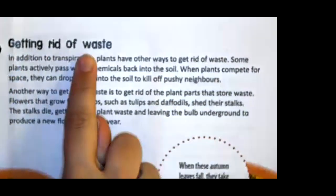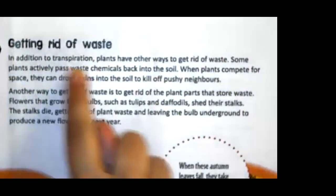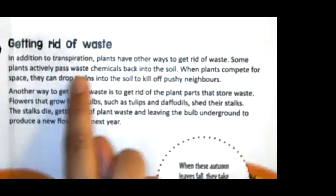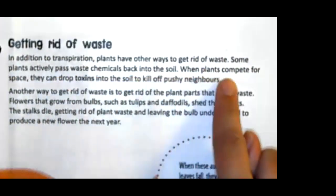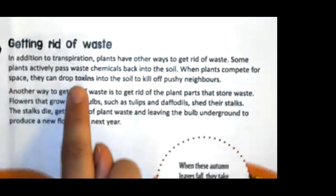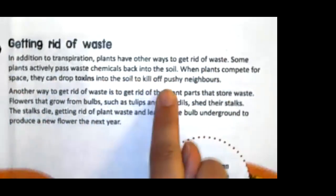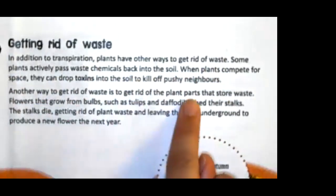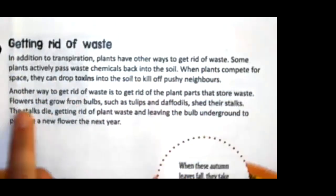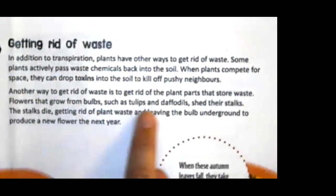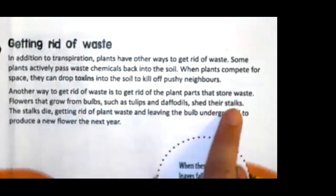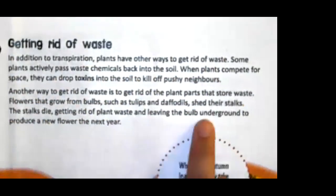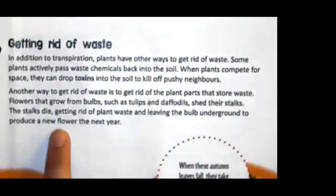Getting rid of waste. In addition to transpiration, plants have other ways to get rid of waste. Some plants actively pass waste chemicals back into the soil. When plants compete for space, they can drop toxins into the soil to kill off pushy neighbors. Another way to get rid of waste is to get rid of the plant parts that store waste. Flowers that grow from bulbs, such as tulips and daffodils, shed their stalks. The stalks die, getting rid of plant waste and leaving the bulb underground to produce a new flower the next year.